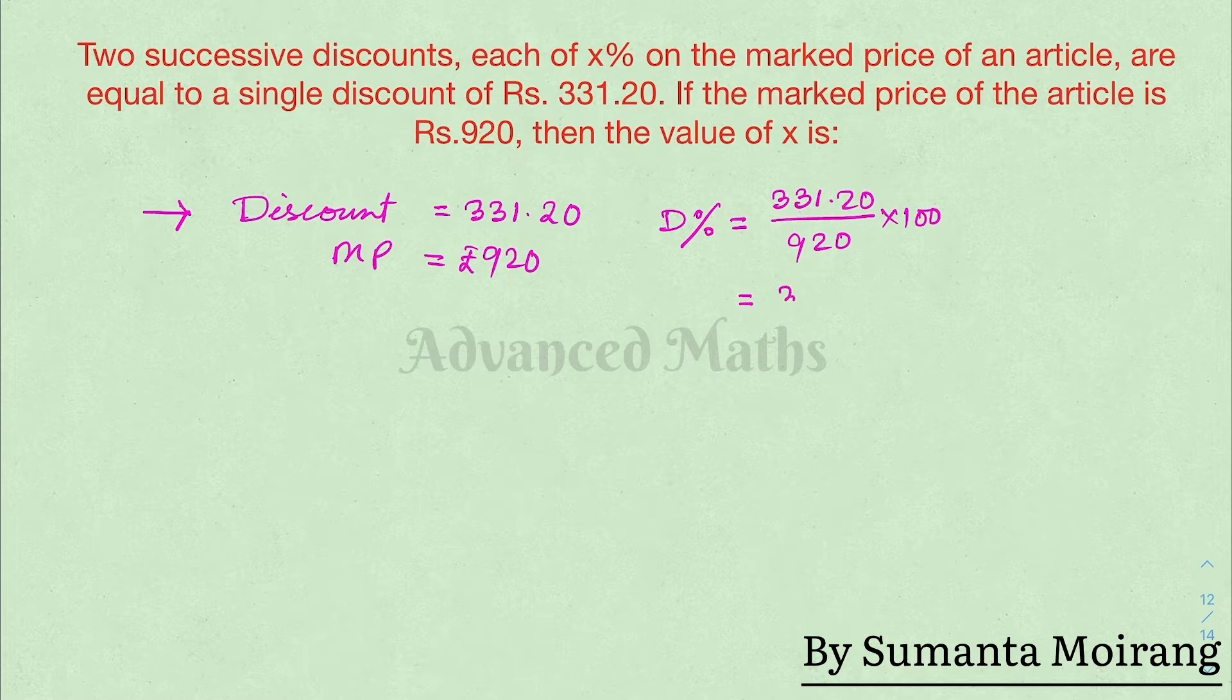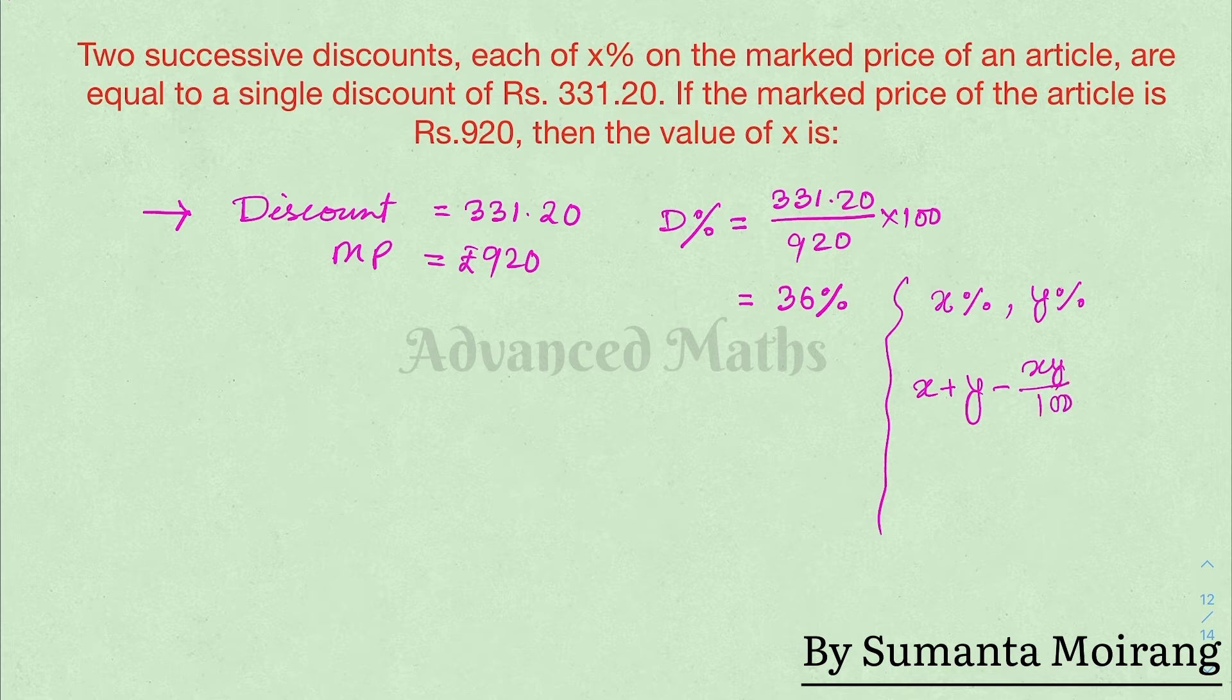For successive discounts of x percent and y percent, the single discount formula is x plus y minus xy by 100. The formula for two successive discounts is x plus y minus xy divided by 100.